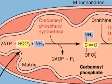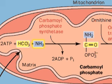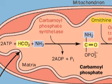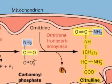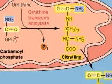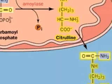The bicarbonate reacts with ammonia to form carbamoyl phosphate. Reaction of ornithine with carbamoyl phosphate gives rise to citrulline, which moves from the mitochondrial matrix to the cytosol.